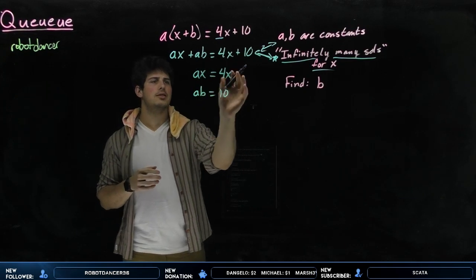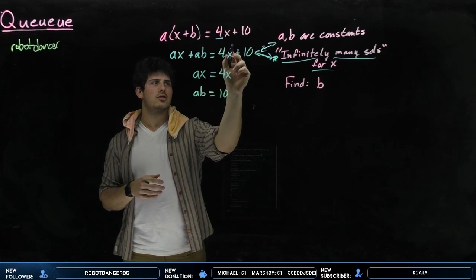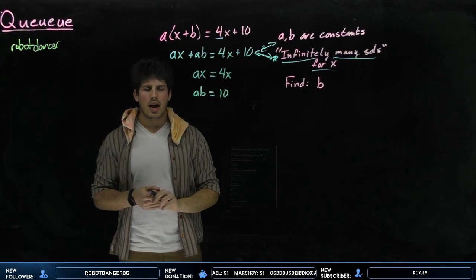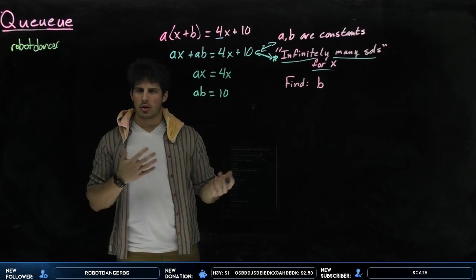This is a times x to the first, and this is 4 times x to the first, so those go together. If I had an x squared value over here, it would go with the x squared value over here, and so on and so forth.